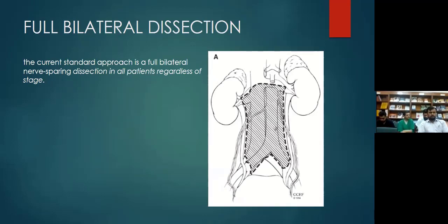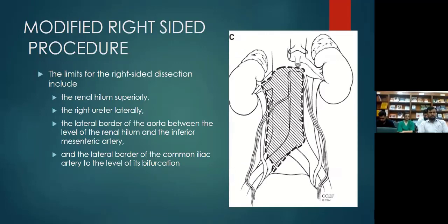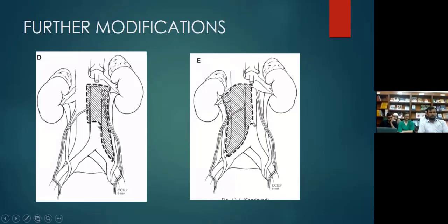For the right-sided modified template, the boundaries are: right renal hilum superiorly, right ureter laterally, lateral border of the aorta between the renal hilum and inferior mesenteric artery, and lateral border of the common iliac artery to its bifurcation — encompassing the interaortocaval region, the main landing site of the right testicular tumor. Further modifications skip the area inferior to the inferior mesenteric artery to preserve the superior hypogastric plexus and protect ejaculation and emission.